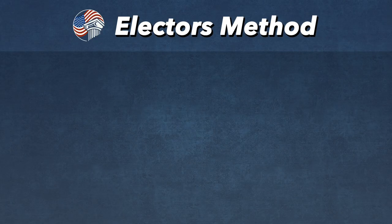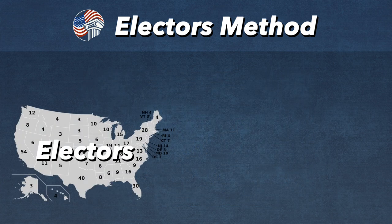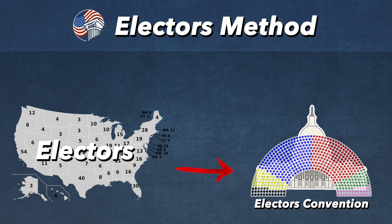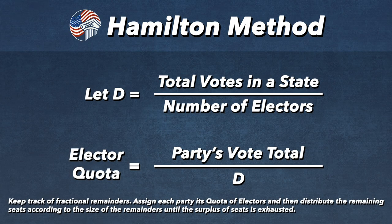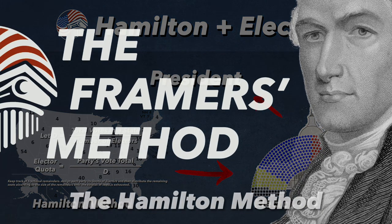The reform option advocated by this channel was also discussed at the Constitutional Convention. An electors' convention would have the 538 electors meet at the seat of government and appoint the next president. To choose electors for this convention, the Hamilton method would ensure a diverse group of electors from the several states. This two-fold combination of the Hamilton method and an electors' convention would prevent populism and tyranny, as both use the framers' method.